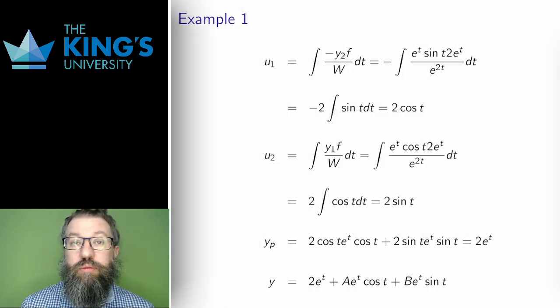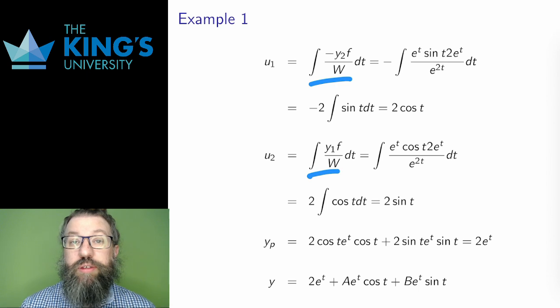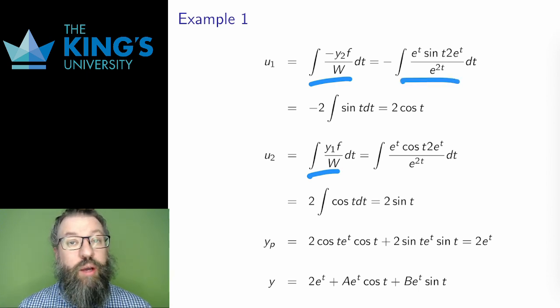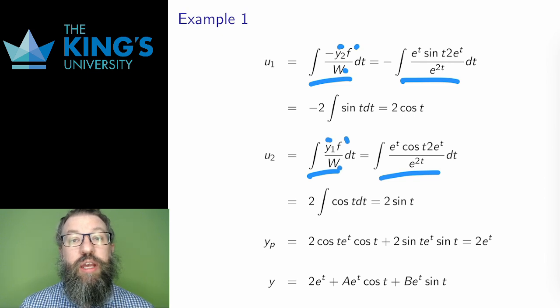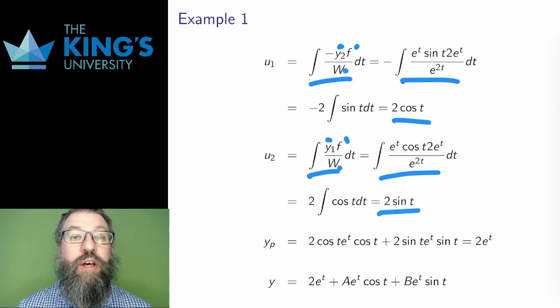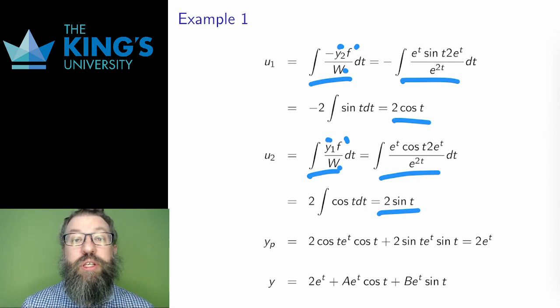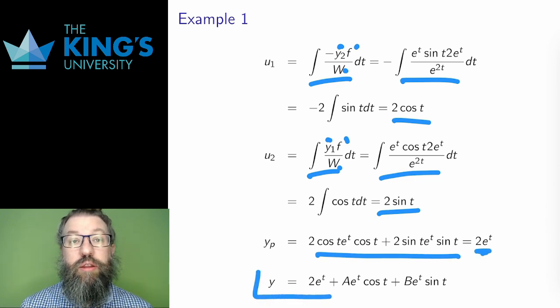Once I have the Wronskian, I just do the integrals for u1 and u2. So here are the equations, and I put all the pieces in. I know f, I know y1, I know y2, I know w. Lots of terms cancel in these integrals, and u1 and u2 work out to 2 cos t and 2 sine t. Then the particular solution is u1 times y1 plus u2 times y2. And again, there's a nice sine squared plus cos squared equals 1 simplification. So the particular solution here is just 2e to the t, and I put that with homogeneous solutions to get the full solution.